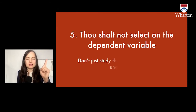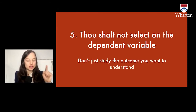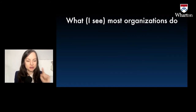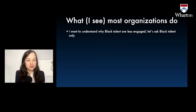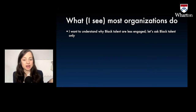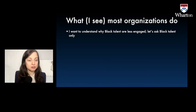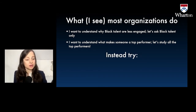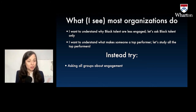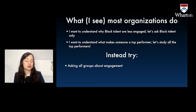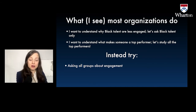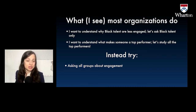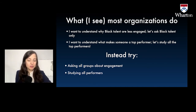Last one: thou shalt not select on the dependent variable. Don't just study the outcome you want to understand. What I see companies do is say, I want to understand why Black talent are less engaged — let's ask the Black talent. I want to understand what makes someone a top performer — let's study the top performers. Okay, but you're missing part of the picture — an important part. Instead, ask all groups about engagement and then compare the reports from Black employees, Asian employees, et cetera, and study all performers and then compare top, mid, et cetera.